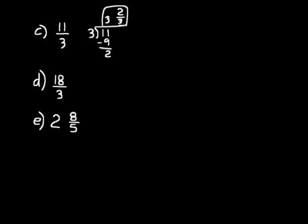On D, eighteen-thirds. Do division again. Three doesn't go into one. Three goes into eighteen six times, exactly. So we have zero for our remainder. We don't put six and zero-thirds. We just write six for our answer. Just a whole number, not a mixed number.